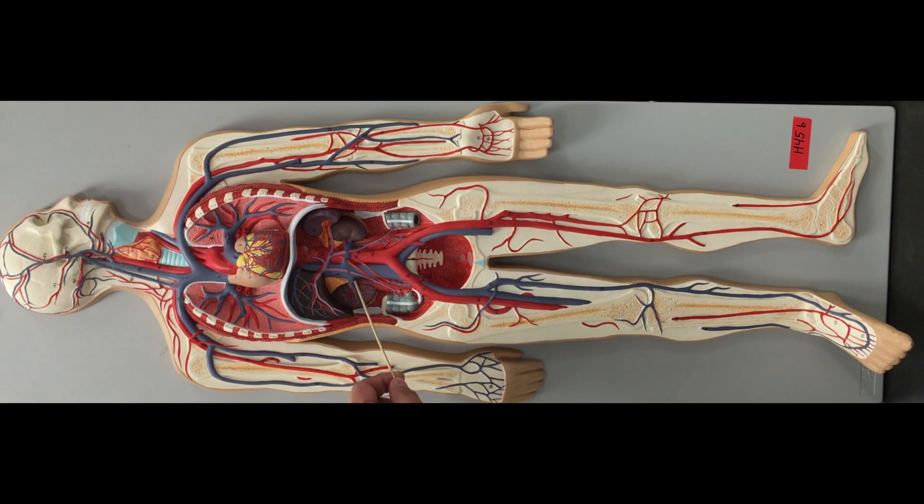As we continue down we have our first major bifurcation, the left and right common iliac vein. We're going to bifurcate again to the internal iliac vein and the external iliac vein.